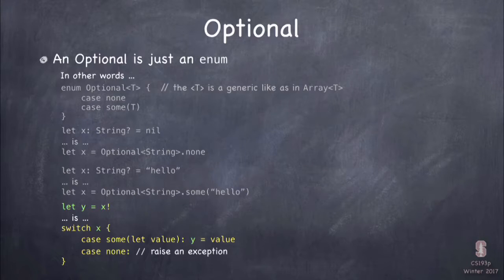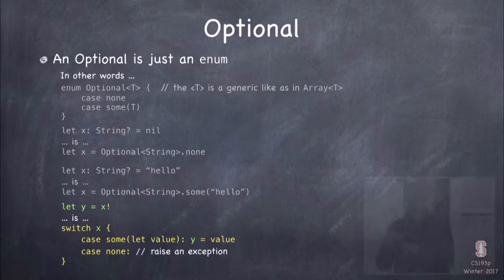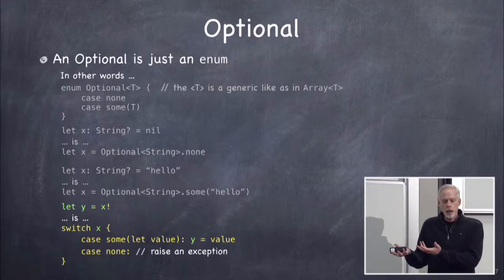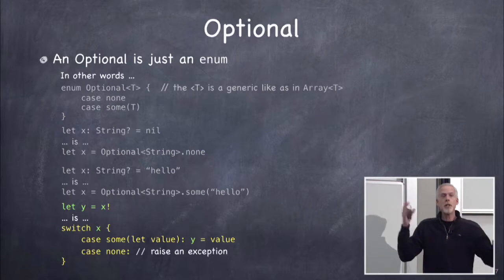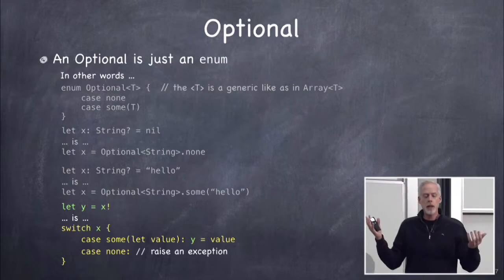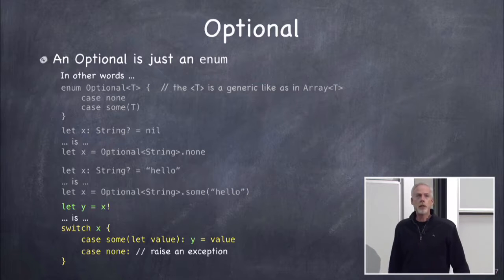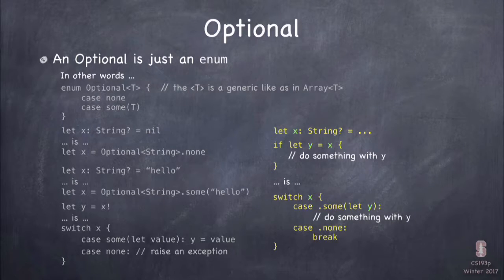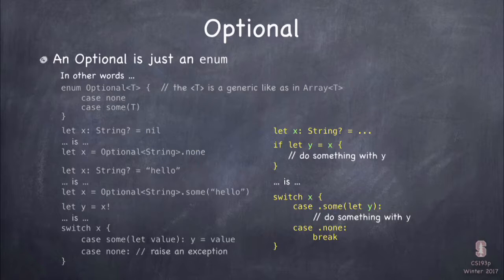The exclamation point unwrap is just doing a switch: if the optional is in the some case, grab the associated value; if it's in the none case, it raises an exception and crashes your program. The if-let is also just a switch, but in the none case it just breaks — does nothing. Optional is a type, it's an enum, just like any other type, with question marks and exclamation points to make the code look simpler.